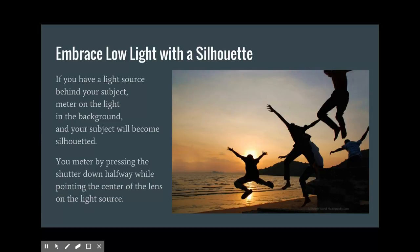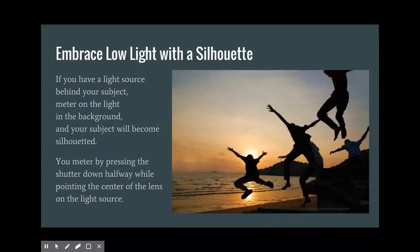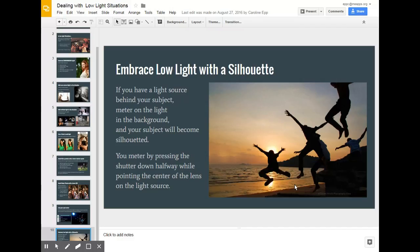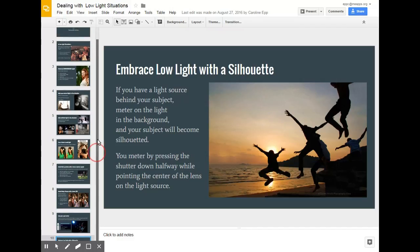You can also just embrace low light and go for a silhouette. If you have a light source behind your subject making them very dark, meter on the bright sky in the background, press the shutter halfway to lock exposure, wait until your subject is positioned how you want — like people jumping — then press all the way down. Your photo will come out with dramatic silhouettes.